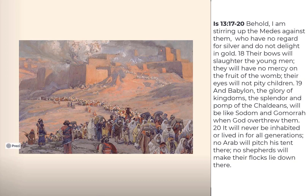Check out Isaiah 13:17-20: 'Behold, I am stirring up the Medes against them, who have no regard for silver and do not delight in gold. Their bows will slaughter the young men; they will have no mercy on the fruit of the womb; their eyes will have no pity on children. And Babylon, the glory of kingdoms, the splendor and pomp of the Chaldeans, will be like Sodom and Gomorrah when God overthrew them.'